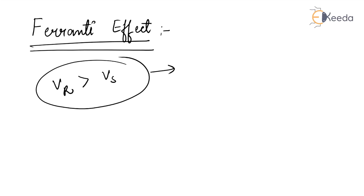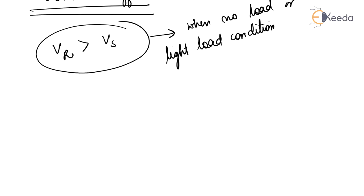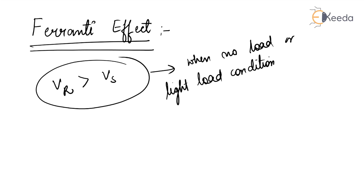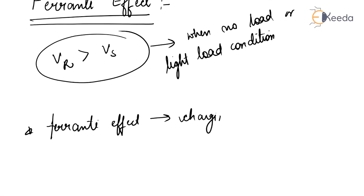This effect mainly occurs because of light load or open circuit at the receiving end. When a no-load or light-load condition occurs, the terminal voltage in a transmission line will be greater than the supply voltage, meaning Vr is greater than Vs. The Ferranti Effect is due to the charging current of the line.